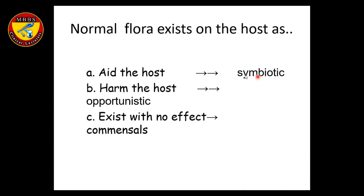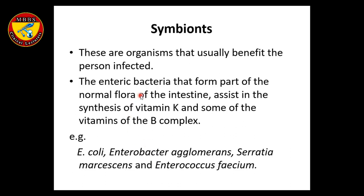Normal flora may have a symbiotic, opportunistic, or commensal relationship with the host. Symbionts usually benefit the person — for example, bacteria in the intestine assist in the synthesis of vitamin K and some B complex vitamins.